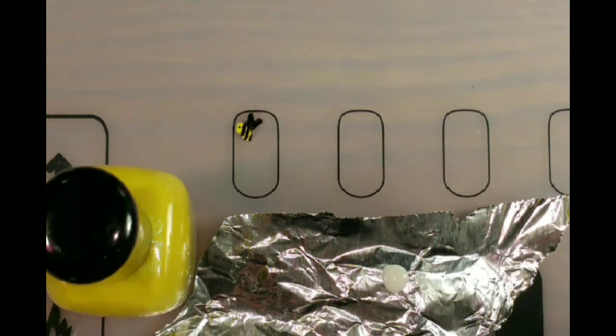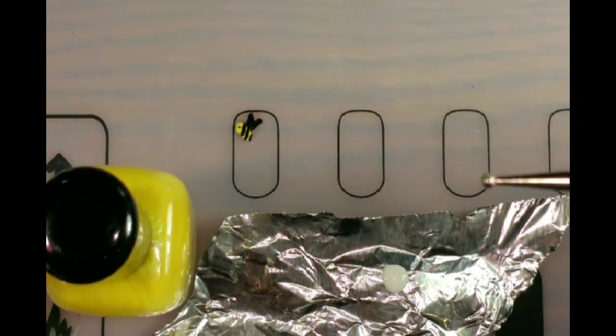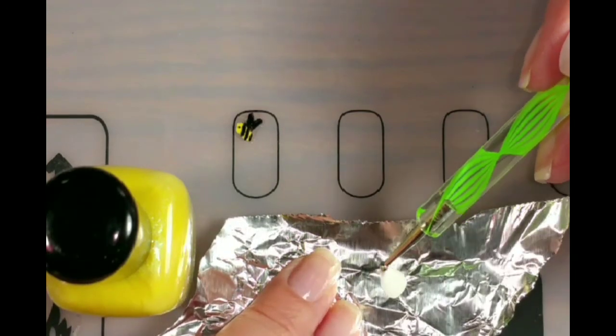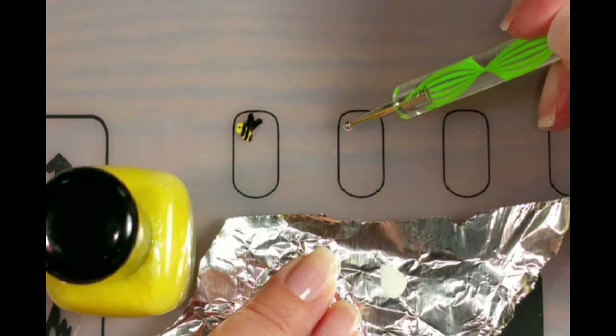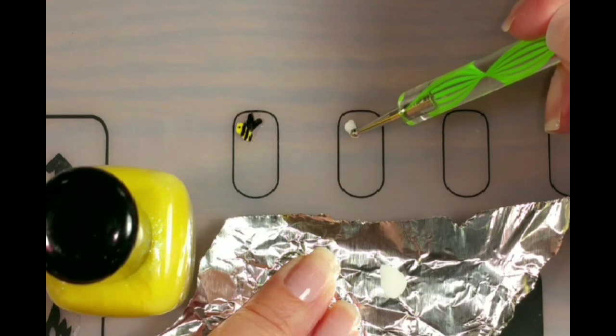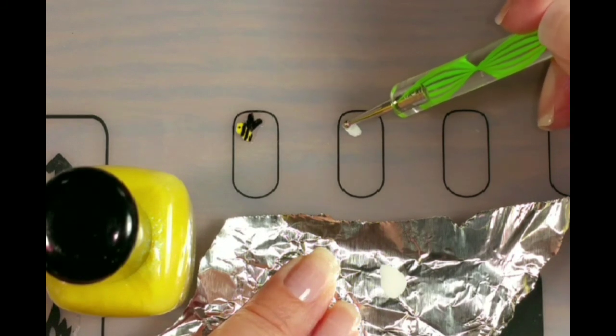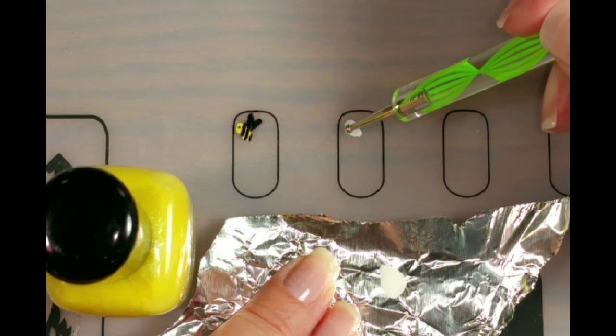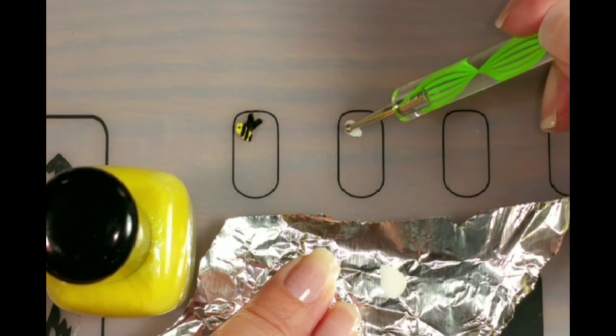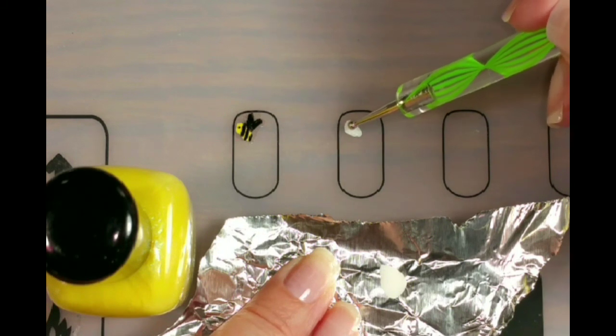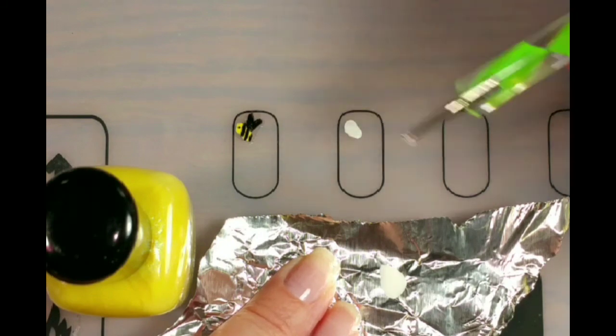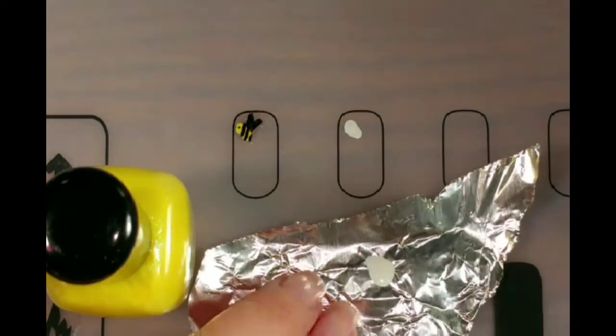Then I took my dotting tool and I picked up some of the white and I just kind of made a little blob and kind of brought it down like this. That's exactly what I did. I brought it to a point. And this is basically just the base so that the yellow stands out a little bit better.